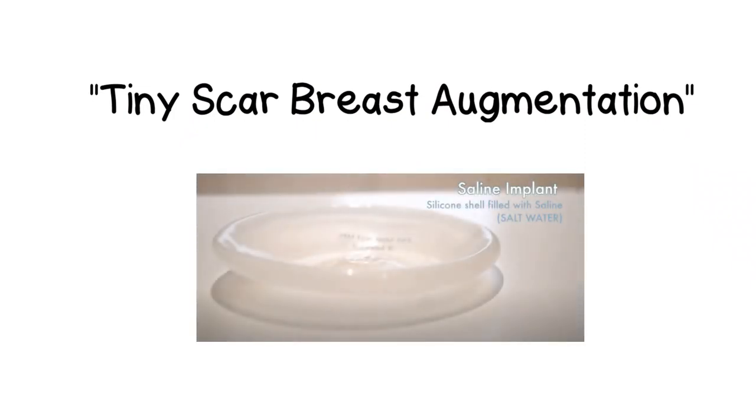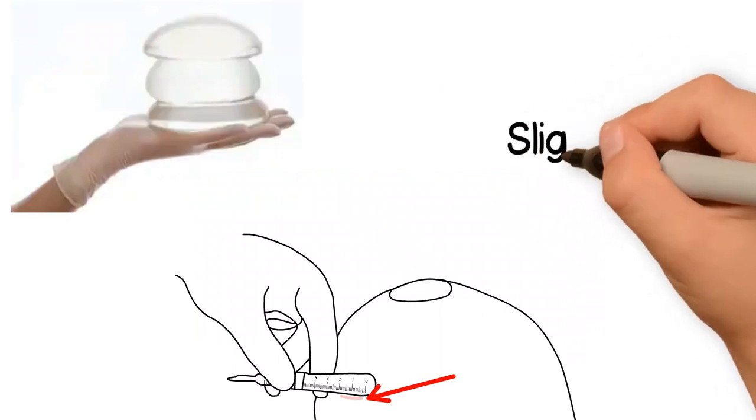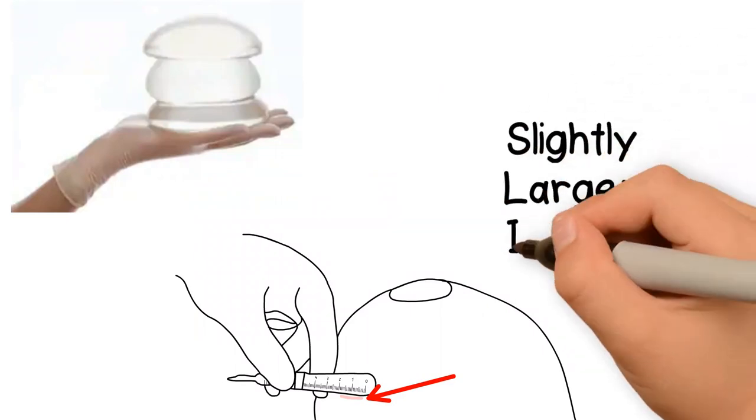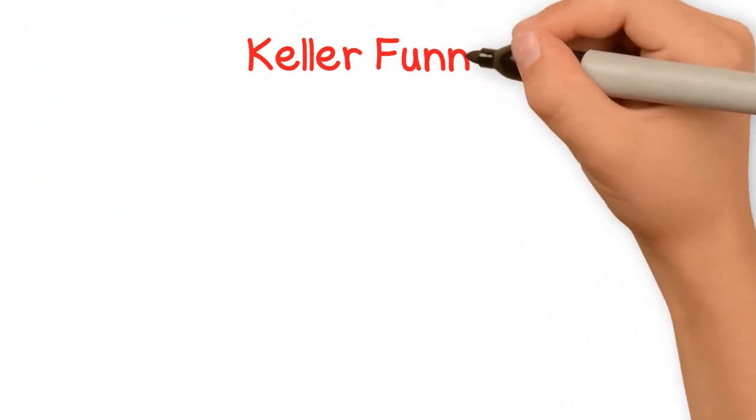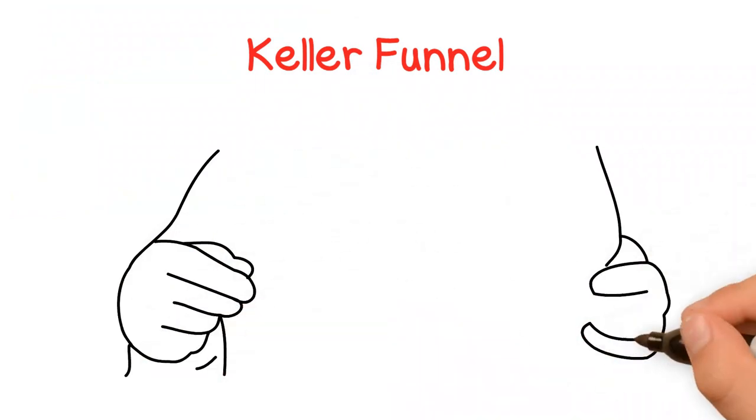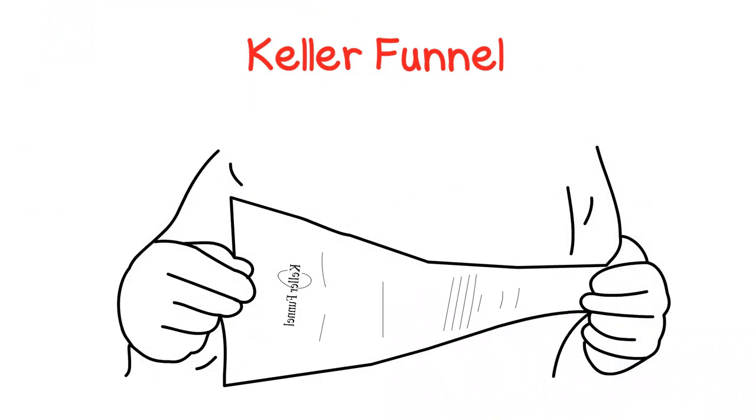Saline is our preferred implant for this tiny scar breast augmentation procedure. However, we are also able to use silicone cohesive gel, which does require a slightly larger incision. With the use of cone-shaped device called the Keller funnel, we are able to insert a silicone implant through a smaller incision, although slightly larger than what would be needed for a saline implant.